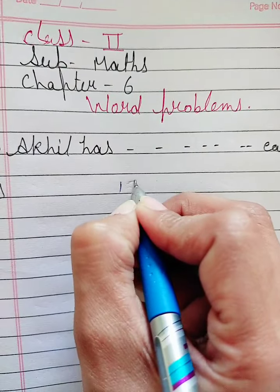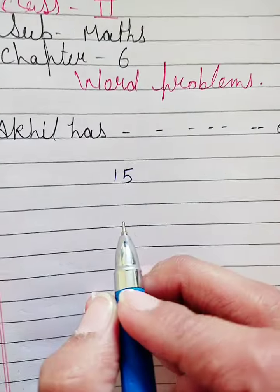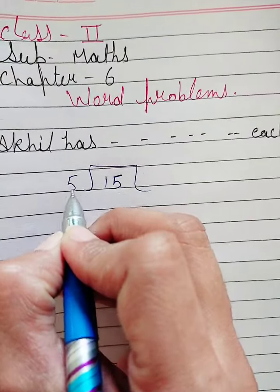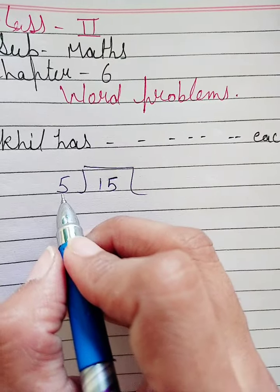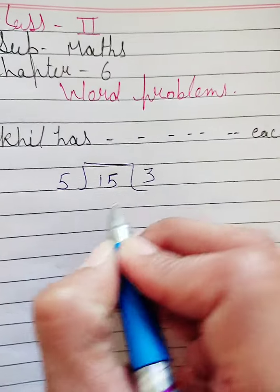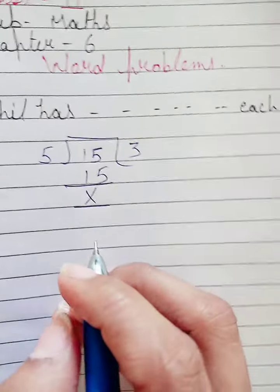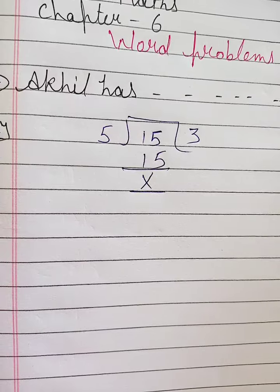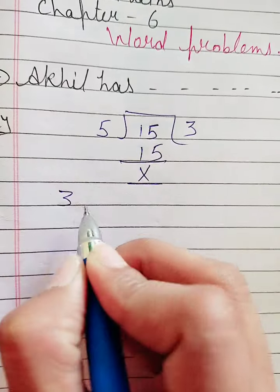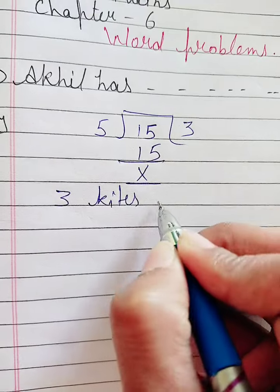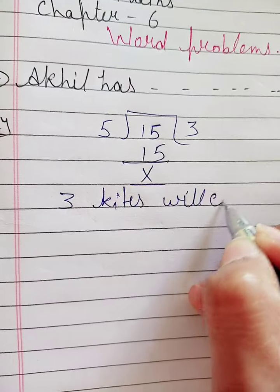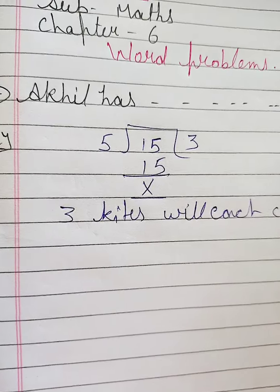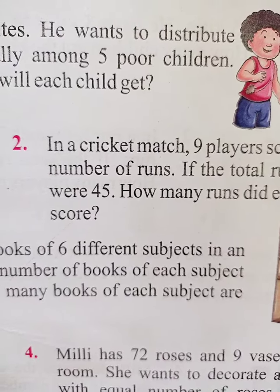You will solve this question like this: 15 divided by 5. Now you will read the table of five — five one is five, five two is ten, five three is fifteen. So three kites will each child get.